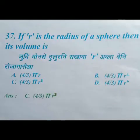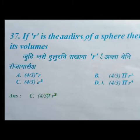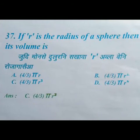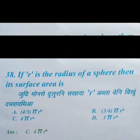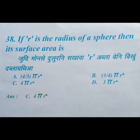If R is the radius of a sphere, then its volume — we have four options and the right answer is option C: 4 by 3 into pi r cube. If R is the radius of a sphere, then its surface area — we have four options and the right answer is option C: 4 pi r square.